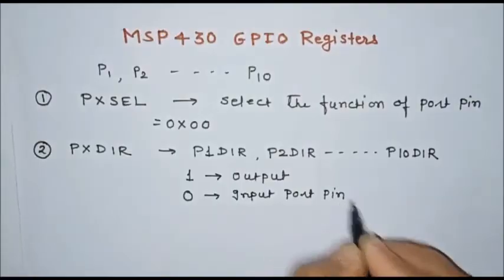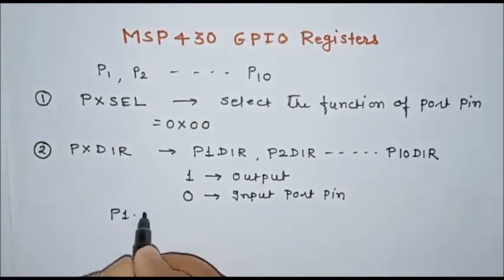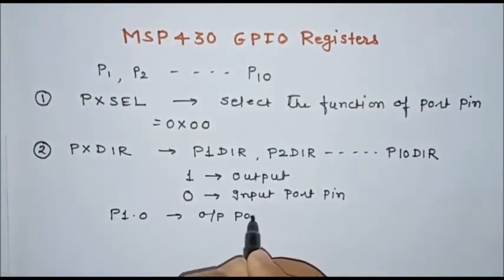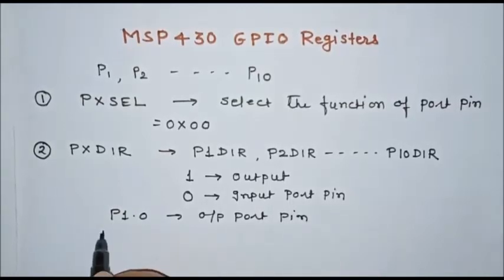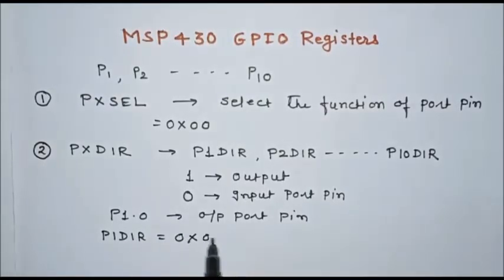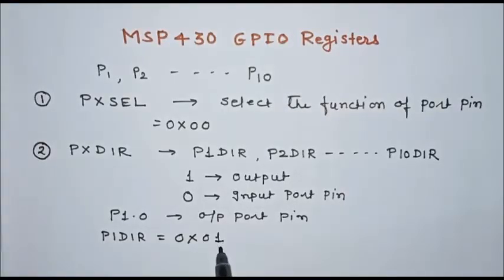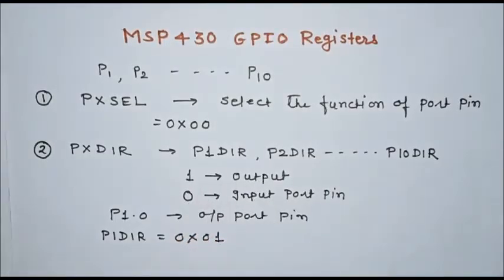For example, suppose we want to use P1.0 as an output port pin. We initialize the P1DIR register with the value 0x01 — the bit 0 is set to 1, which selects P1.0 as an output port pin.